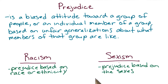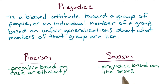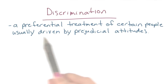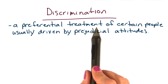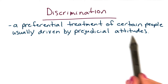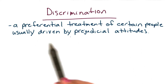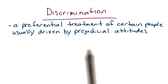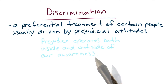Remember that prejudice is a biased attitude. But when that attitude changes to behavior, we see that discrimination can occur. Discrimination is a preferential treatment of certain people, usually driven by prejudicial attitudes.